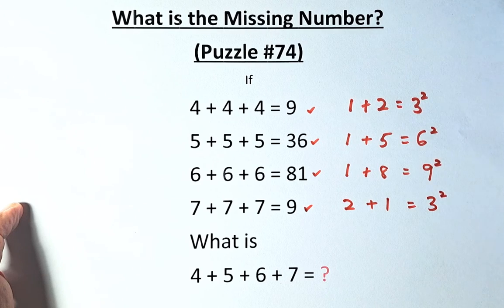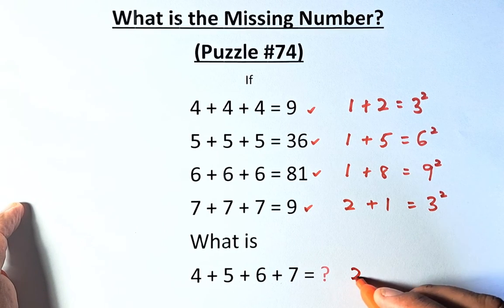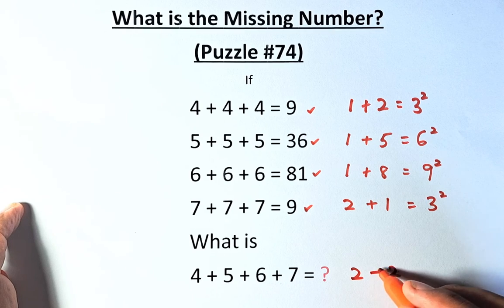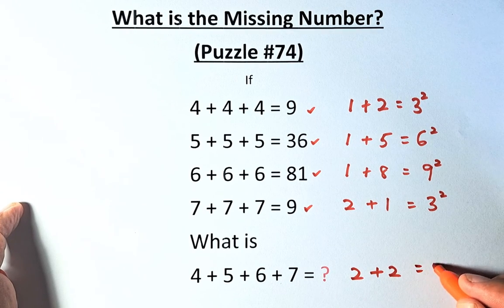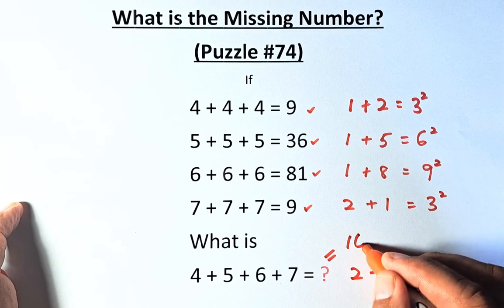So what is 4 plus 5 plus 6 plus 7 equals to? So 4 plus 5 is 9, 9 plus 6 is 15, 15 plus 7 is 22. So we're going to add 2 and 2. 2 plus 2 is going to be 4, and the last step is squared. So the question mark equals to 16.